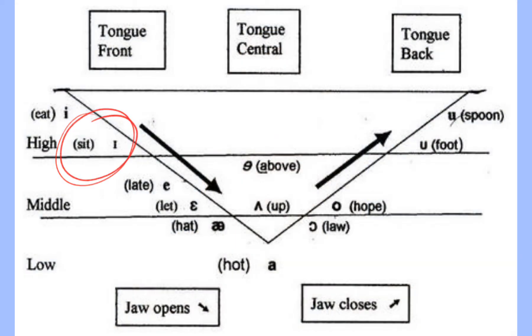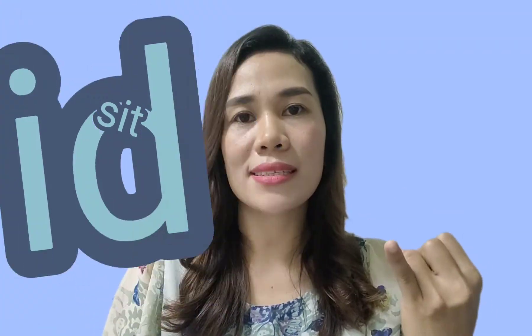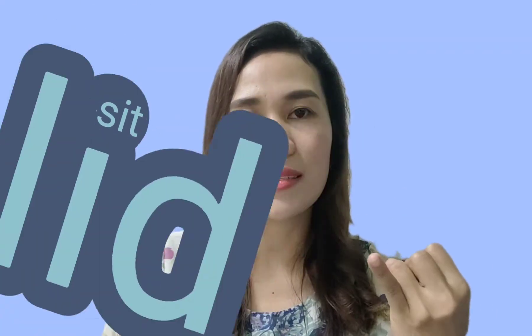Next is the short E sound. It almost has the same way of articulation as the long E, but this one is shorter. Make a small opening of your mouth and move your lips slightly sideways. For one beat, say E: sit, read, lid — that's the short E sound.